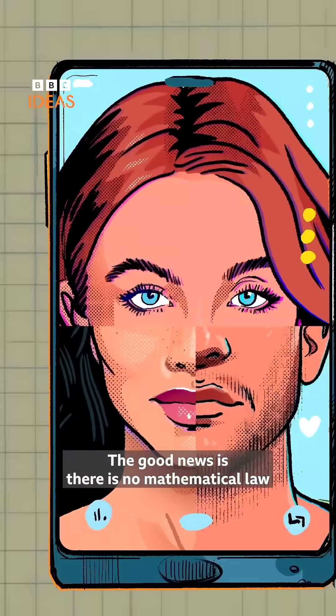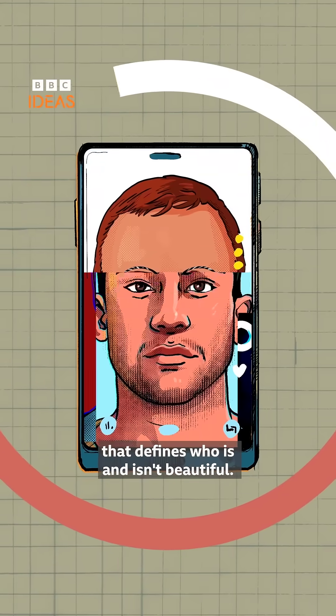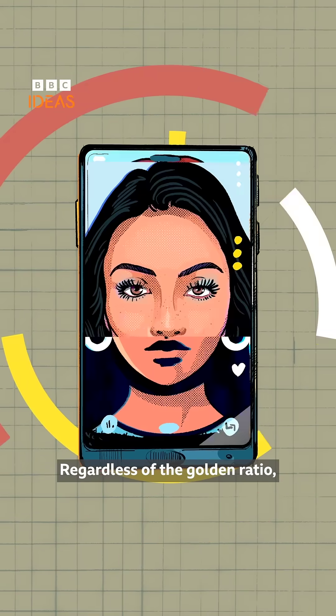The good news is there is no mathematical law that defines who is and isn't beautiful. Regardless of the golden ratio, someone somewhere thinks you're a total stunner.